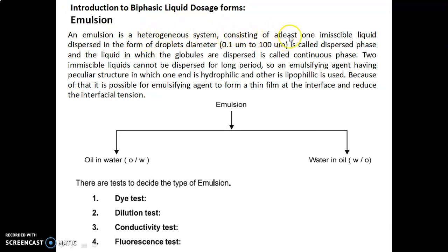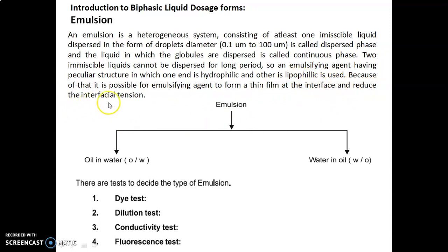...heterogeneous system consisting of at least one immiscible liquid dispersed in the form of droplets with diameter 0.1 micrometer to 200 micrometer, called the dispersed phase. The liquid in which the globules are dispersed is called the continuous phase. The two immiscible liquids cannot be dispersed for a long period, so an emulsifying agent having a peculiar structure — one end hydrophilic and the other lipophilic — is used. Because of that, it is possible for the emulsifying agent to form a thin film at the interface and reduce the interfacial tension.